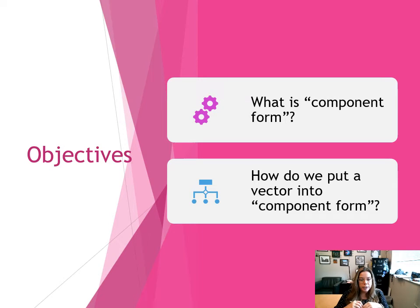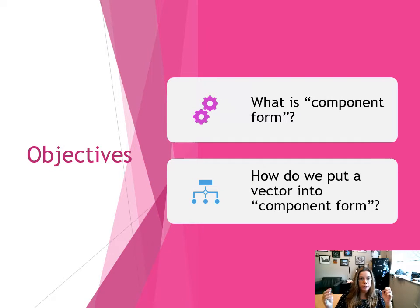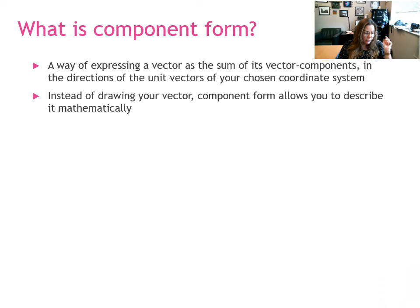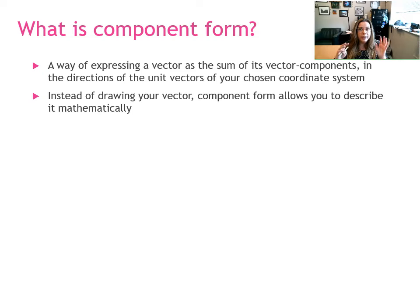This video is your first introduction into how to express a vector in component form. I'm going to show you one method of taking a vector and expressing it in component form using dot products. First, let's talk about what it even means to put a vector into component form. Component form is just a way of showing the vector as an expression where it is equal to the sum of its vector components, which are the projections of the vector along the directions of the coordinate system you're working in.